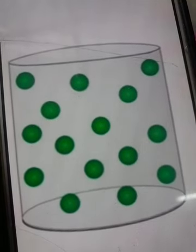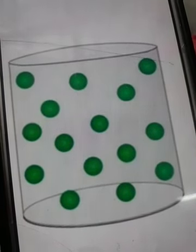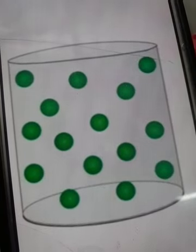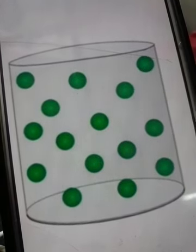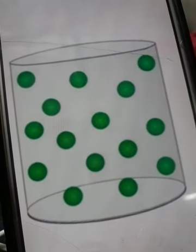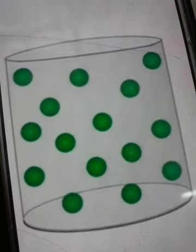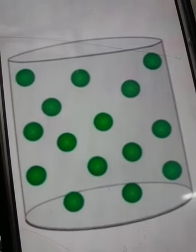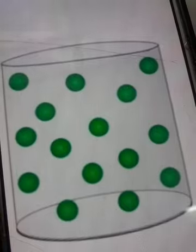Therefore gases do not have any fixed shape and size. Since in gases molecules are very far apart, due to lack of intermolecular force of attraction the molecules can very easily slip, therefore they can flow and they are called fluids. Gases always take the shape of the container in which we put them.